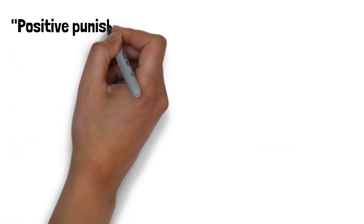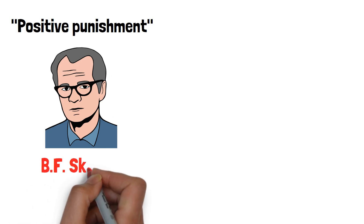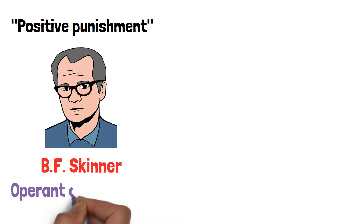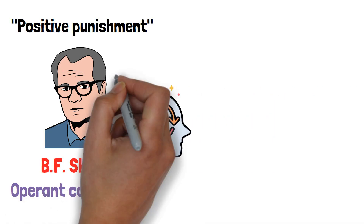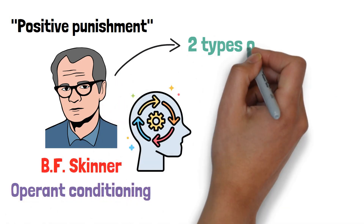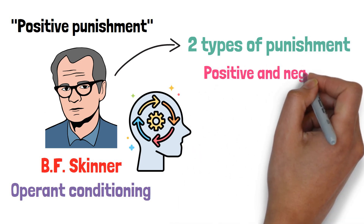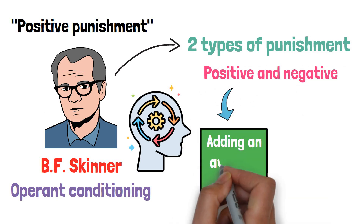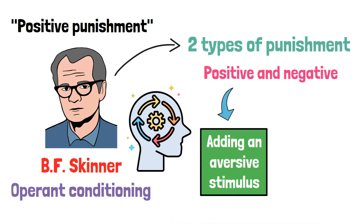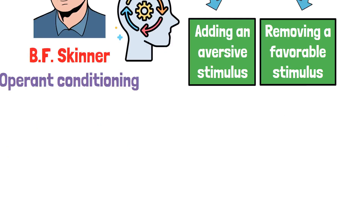The term positive punishment originates from B.F. Skinner's work in operant conditioning. Skinner, a renowned psychologist, identified two types of punishment: positive and negative. Positive punishment involves adding an aversive stimulus, while negative punishment involves removing a favorable stimulus.